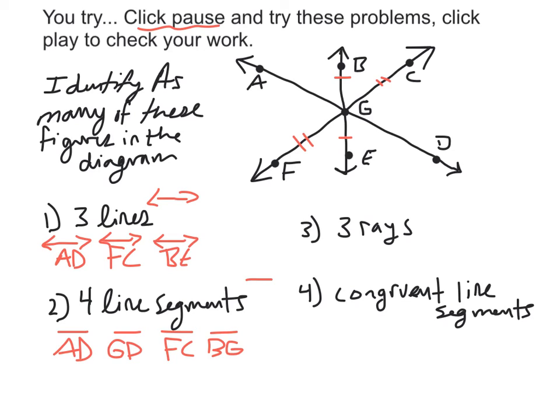Number three, can you identify three rays? So a ray uses this symbol over the two capital letters, the two points. So I could go with ray GD, ray GA, ray GB. There's three.